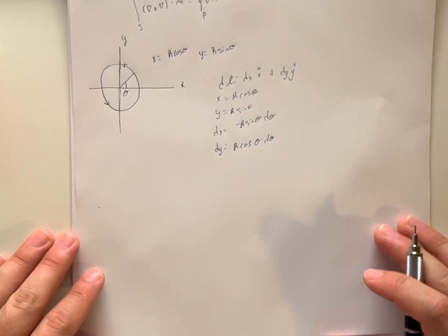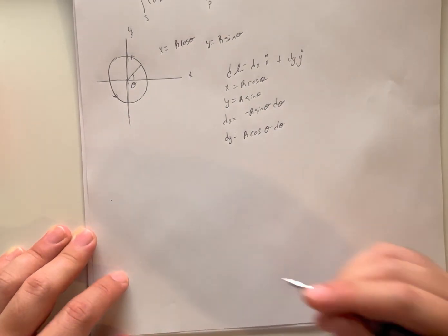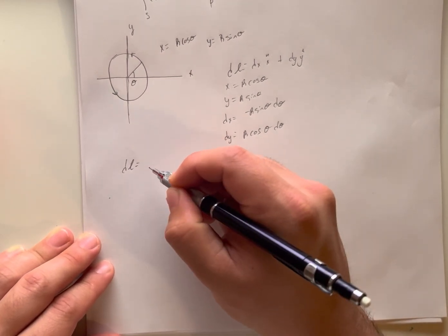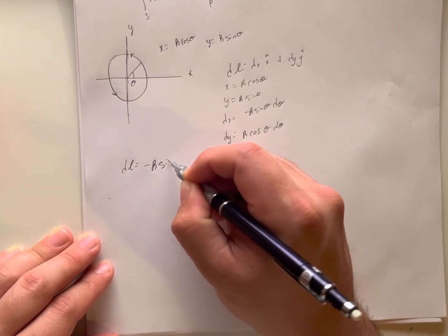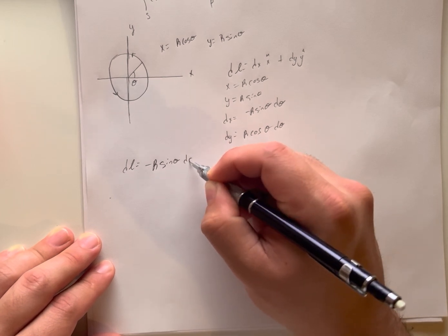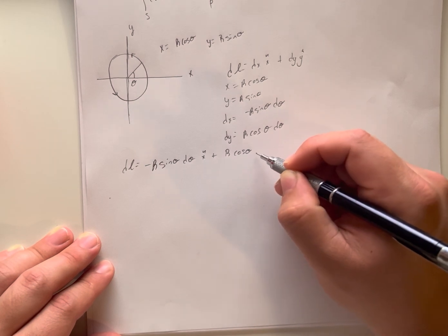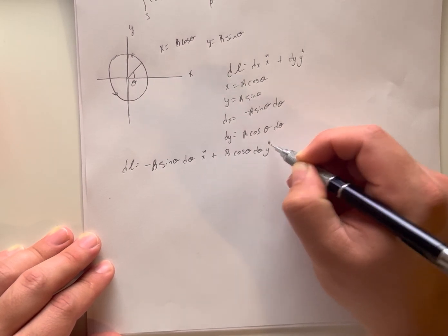Once we have those given, we can plug it right back into our displacement vector to get the new function: dl equals negative R*sin(theta)*d-theta*x-hat plus R*cos(theta)*d-theta*y-hat.